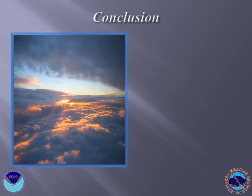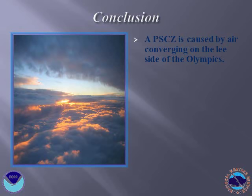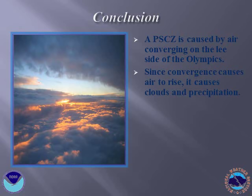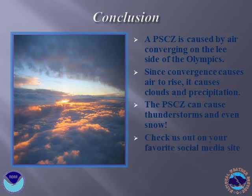In conclusion, recall that a Convergence Zone is caused by air colliding or converging on the lee side of the Olympic Mountains over the Puget Sound. This convergence causes air to rise, forming clouds and rain. This can lead to thunderstorms and even snow in the Puget Sound area. Make sure to check us out on your favorite social media site or get your latest forecast at www.weather.gov/seattle.